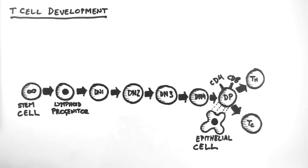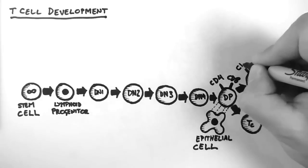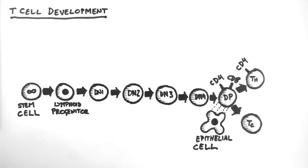So the cells that become helper T cells stop expressing CD8, but they continue to express CD4. So they are CD4 positive and CD8 negative.